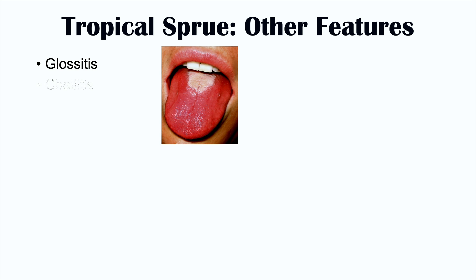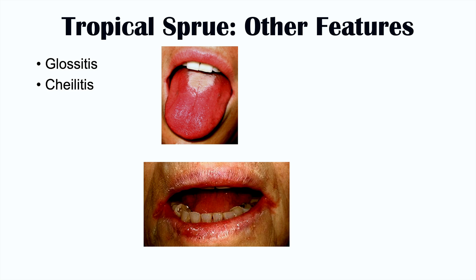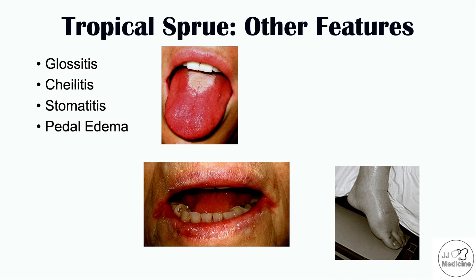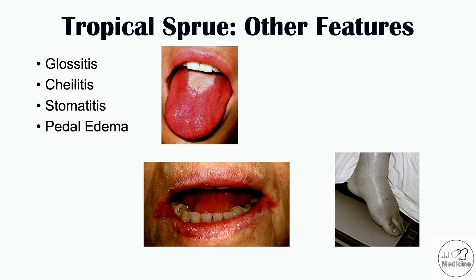There are other features of tropical sprue also noted in patients. Some of these include glossitis — an inflammation of the tongue — chelitis or angular chelitis, which is dry cracked lips usually at the angles of the lips, stomatitis which is inflammation of the mouth, and pedal edema, where the feet become swollen due to interstitial fluid trapped within the feet.